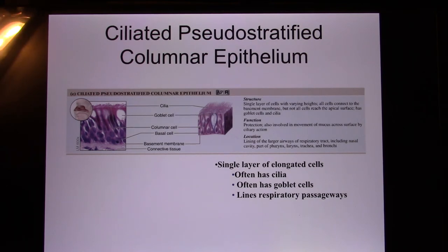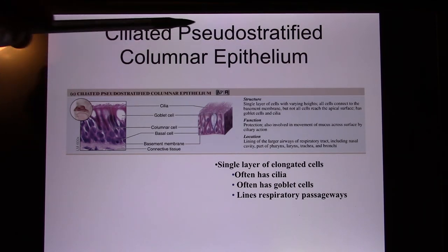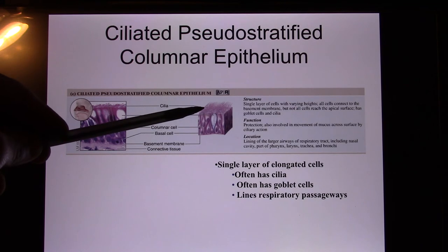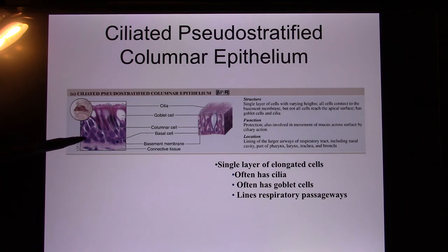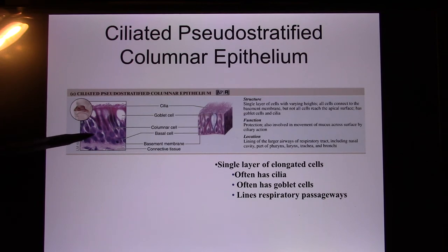A very unique type: pseudostratified ciliated columnar. It looks like multiple layers but is not really — it just looks like multiple layers because all the cells touch the basement membrane, so it is actually one layer. In your airway you have ciliated pseudostratified columnar epithelium. The cilia are structures on the apical side that can move.